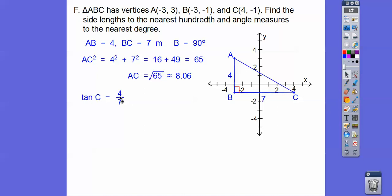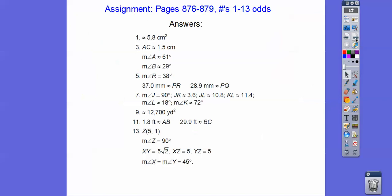So punch in the calculator, 4 divided by 7. And then we're going to do inverse trig or second function trig. And we get about 30 degrees. So it's about a 30, 60, 90 triangle. All right. If you are in my class, I'm going to assign you that. Take care.